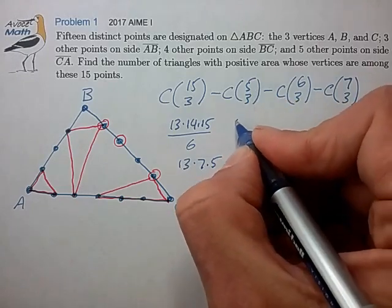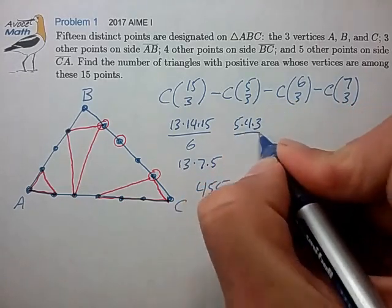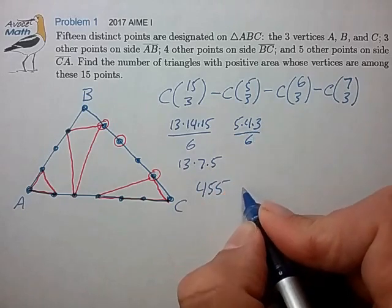C(5,3), that's 5 times 4 times 3 divided by 6, that's just 10.